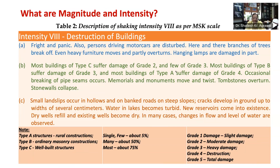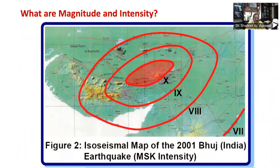As you can see in this table, the intensity scales are based on three features of shaking: perception by people and animals, performance of buildings, and changes in natural surroundings. For example, at intensity 8, there will be fright and panic among human beings, buildings will suffer damage depending upon their typologies, and there will be changes in the ground such as small landslips and cracks.